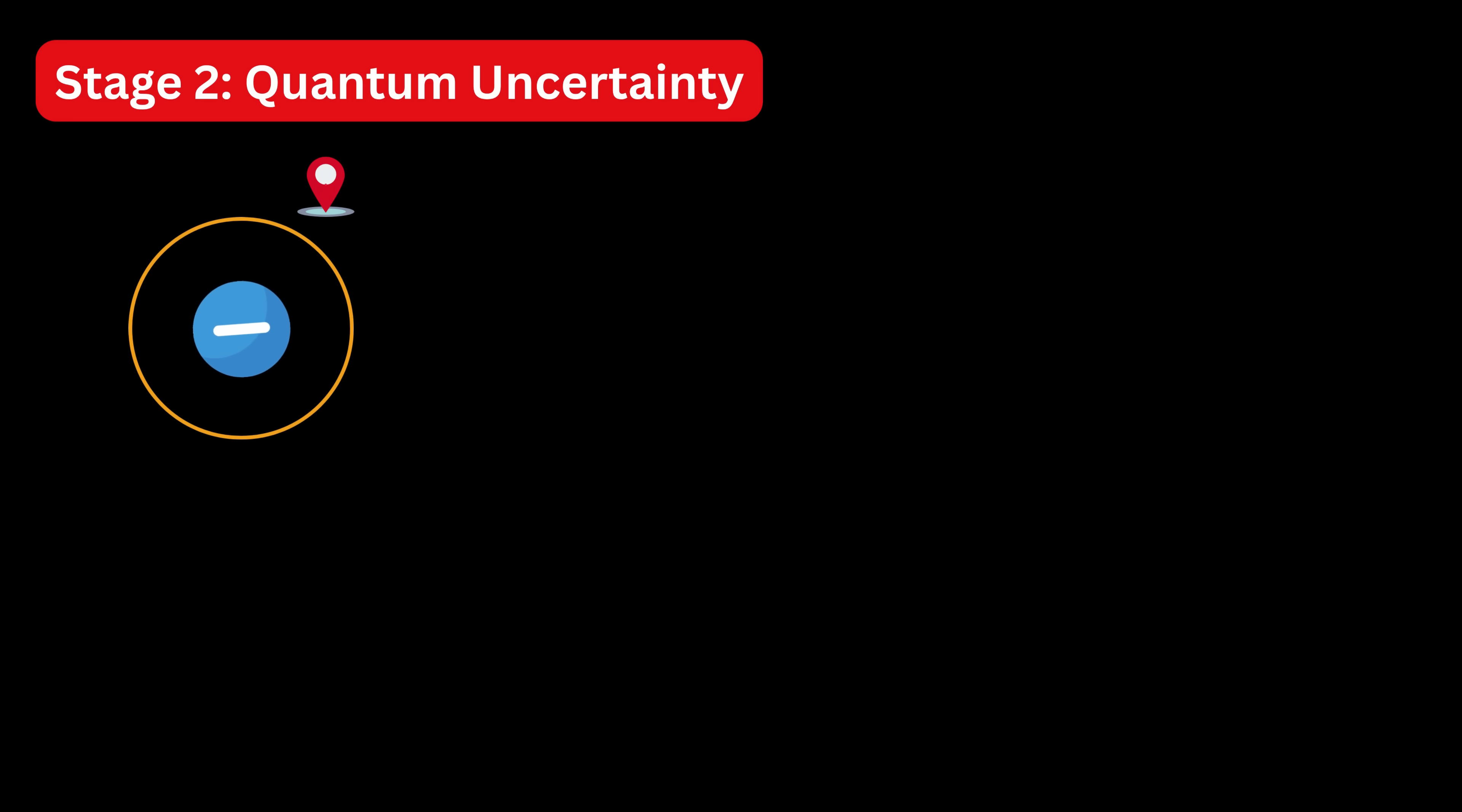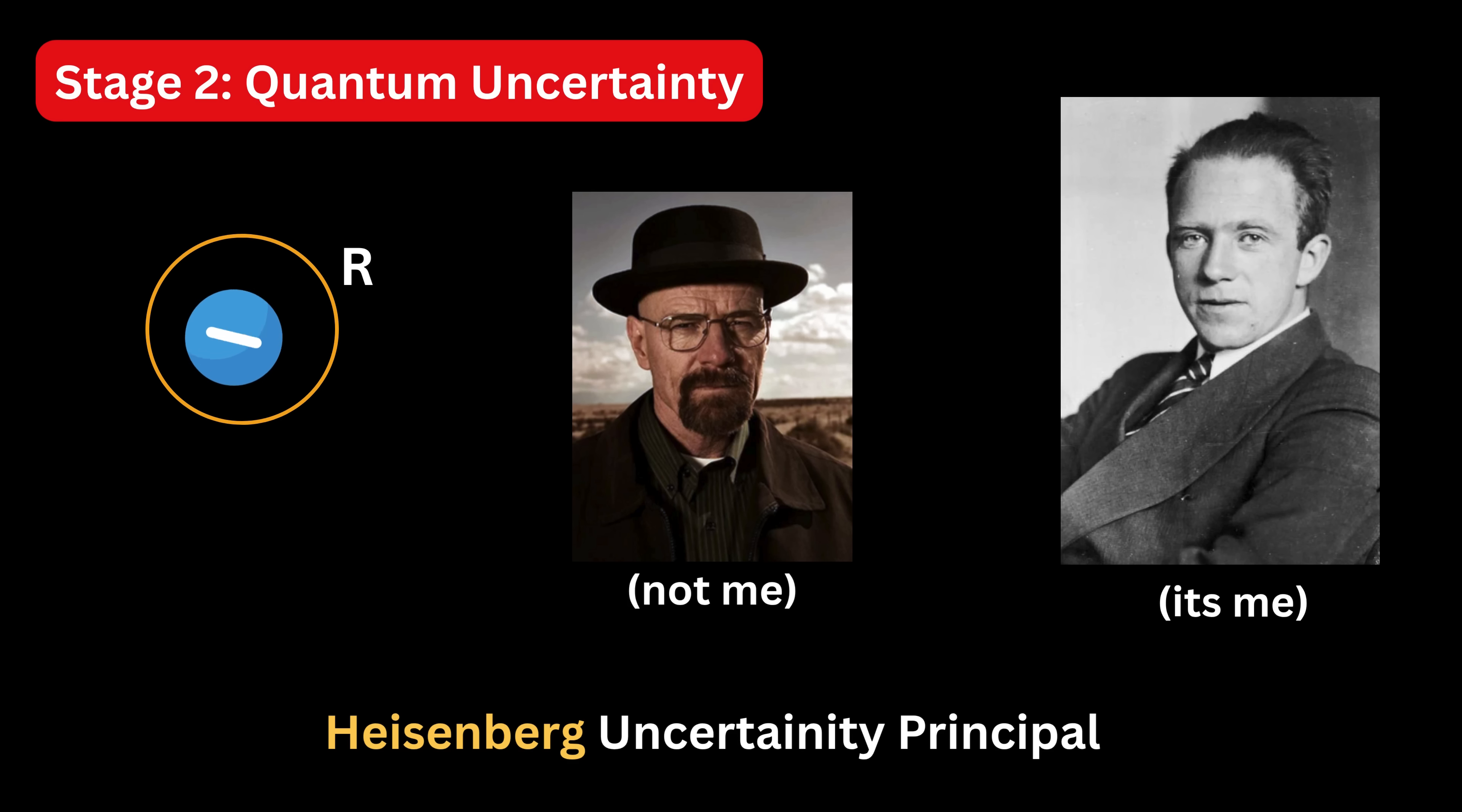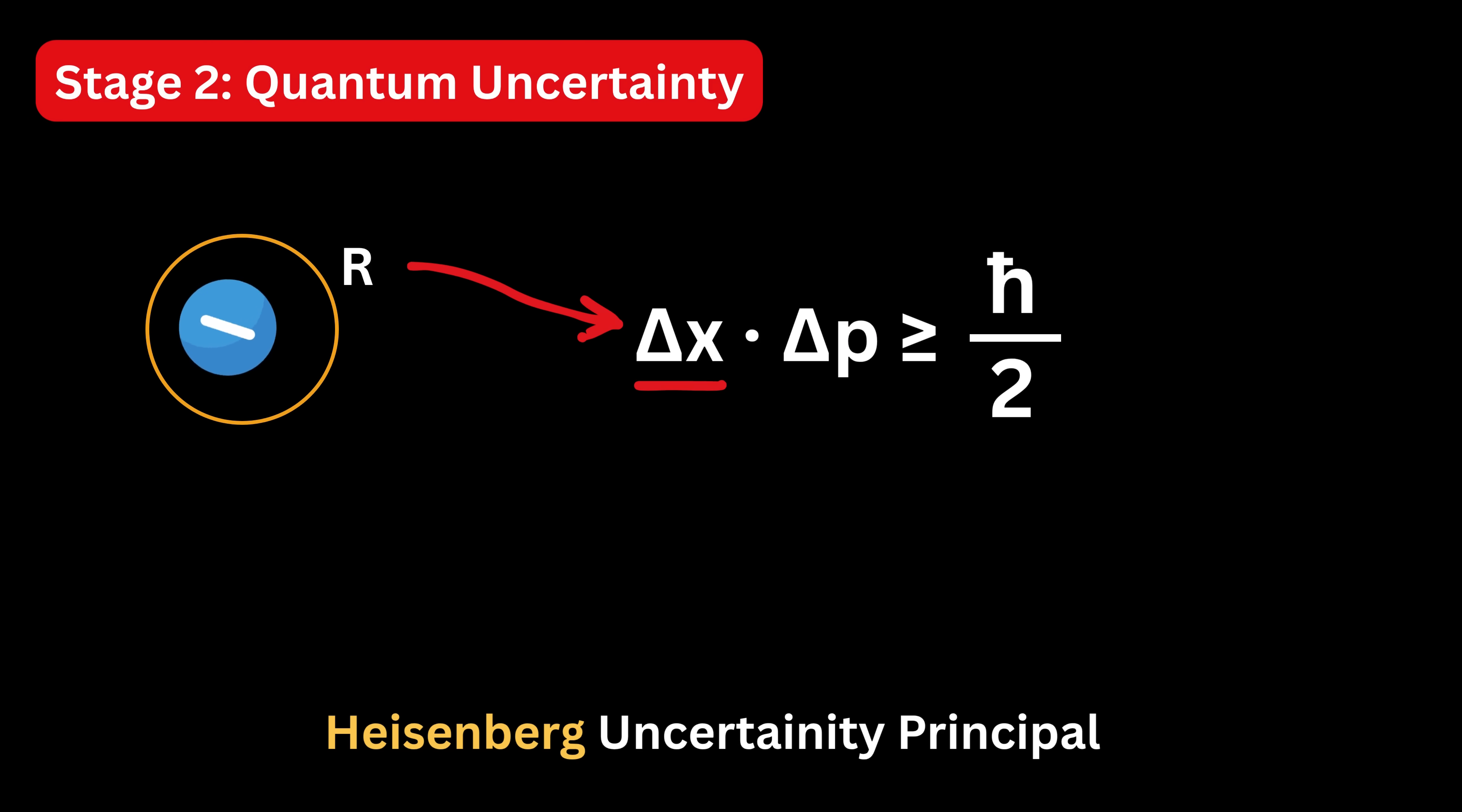The closer you try to pin down the electron's position, let's say, inside a tiny space of size R, the more violently it starts resisting. This is a built-in rule of nature, or a fundamental rule called the Heisenberg Uncertainty Principle. It says that the more accurately you try to know where a particle is, which means the position of the particle, the less accurately you can know how fast it's moving, or in which direction.